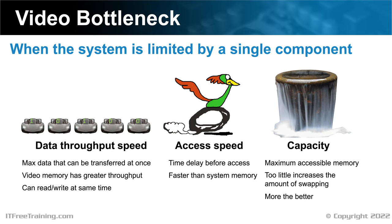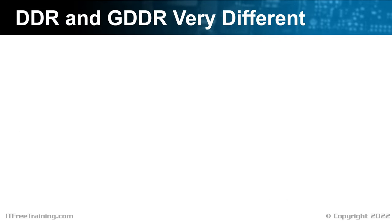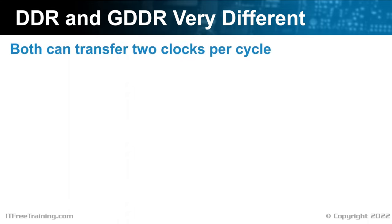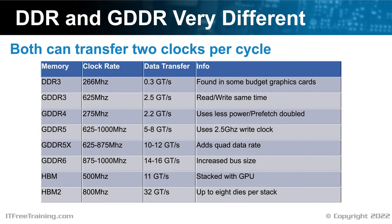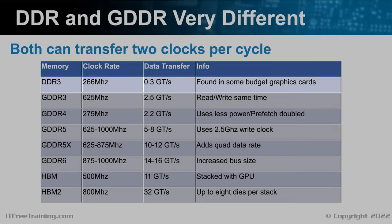When comparing DDR and GDDR memory, they are very different — before GDDR3 they were similar, but after that they went in different directions. The main similarity is that both can transfer two pieces of data per cycle, hence the name Double Data Rate. Computer memory is sold in modules with generally 16 chips working together on a high-speed bus, which is why individual chips can run slower than the module's overall transfer rate. A single GDDR chip runs at around the same speed as a full DDR memory module.